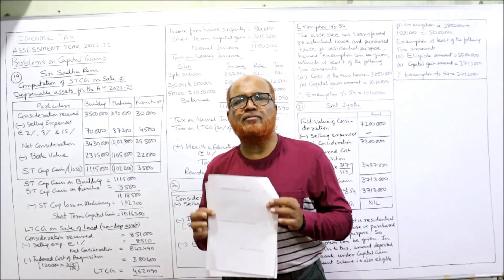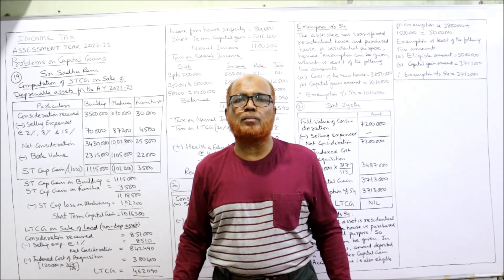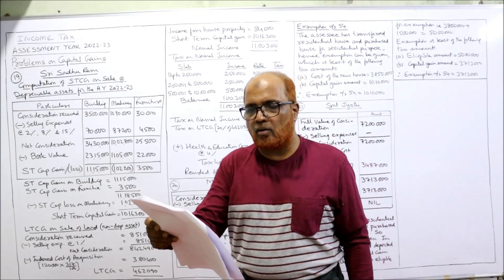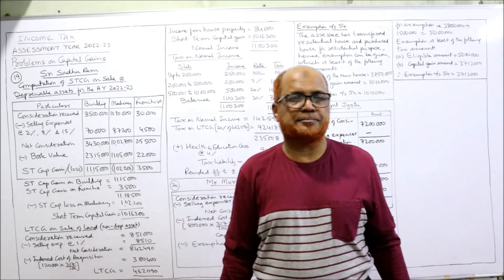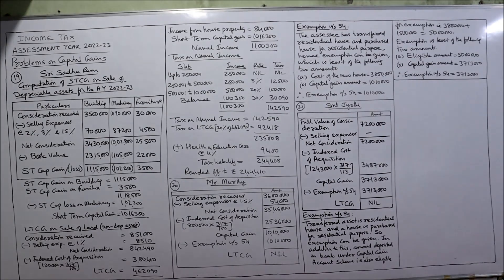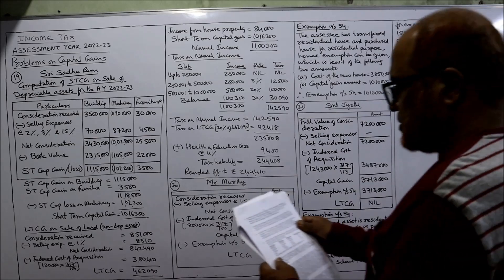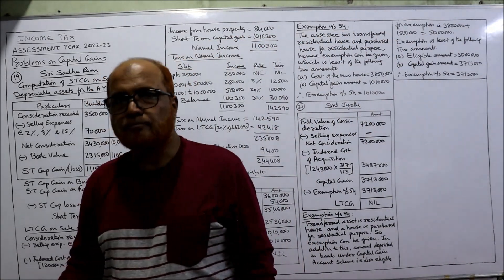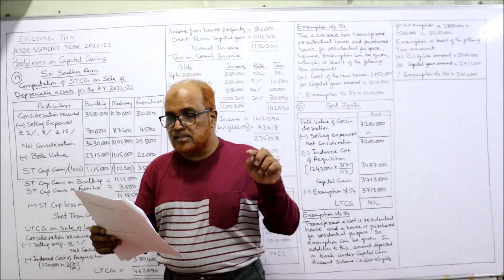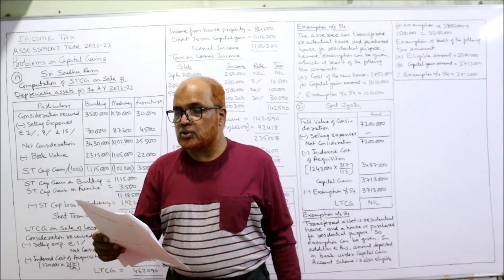I expect my viewers to have a printout of the problems which I have given in the link under my description. Take a screenshot of the points and I'll explain all the points in detail. Now see the 19th problem: Sri Sadhu Ram is holding the following assets in his business for the last 23 years.